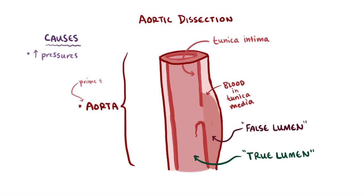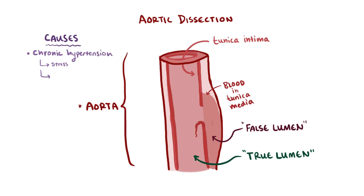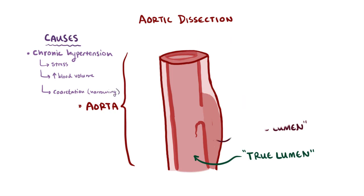So what causes aortic dissections? Chronic hypertension is the major cause, whether the hypertension is caused by stress or from increased blood plasma volume like in pregnancy. Blood vessel coarctation, which is the narrowing of a blood vessel, can also cause dissection.